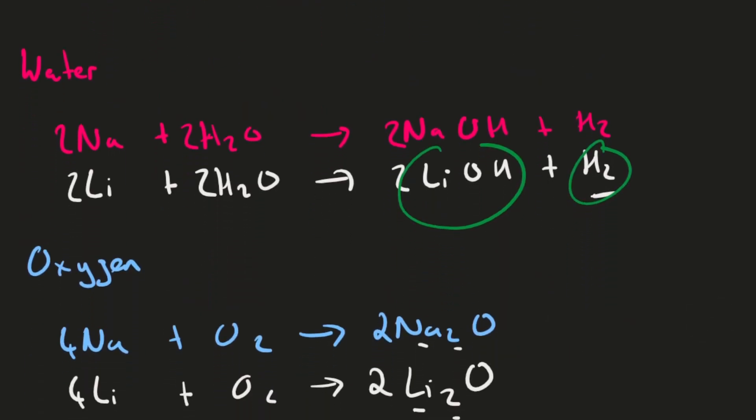Next is oxygen. Whenever you react a Group 1 element with oxygen, you form an oxide. If it's sodium you form sodium oxide, and if it's lithium you form lithium oxide. The proportions are the same as well - it's Na2O and Li2O. All of these equations are balanced to make sure that the same number of atoms are on the left as on the right.